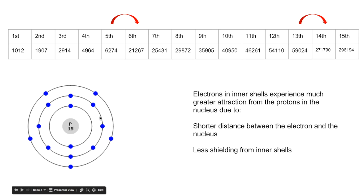And these electrons here also experience less shielding from the inner shells because essentially there's only that shell shielding the attraction, whereas these electrons had two shells in the way.